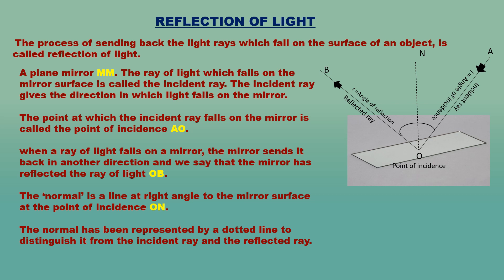We have a plane mirror MM. The ray of light which falls on the mirror surface is called the incident ray. AO is the incident ray of light; it gives the direction in which light falls on the mirror. The point at which the incident ray falls on the mirror is called the point of incidence — point O on the mirror surface. The ray of light which is sent back by the mirror is called the reflected ray. OB is the reflected ray of light.